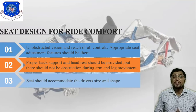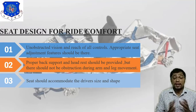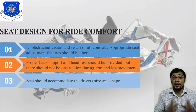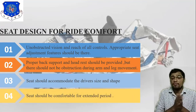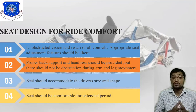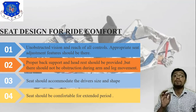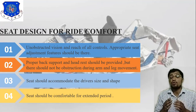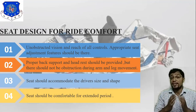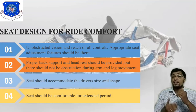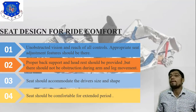The third point is that the seat should accommodate the driver's size — the driver seat is flexible according to driver size. The fourth point is that the seat should be comfortable for an extended period. To summarize the parameters: visibility and reach of all controls; back support; seat accommodation for driver size (making the seat flexible); and comfort for extended periods.